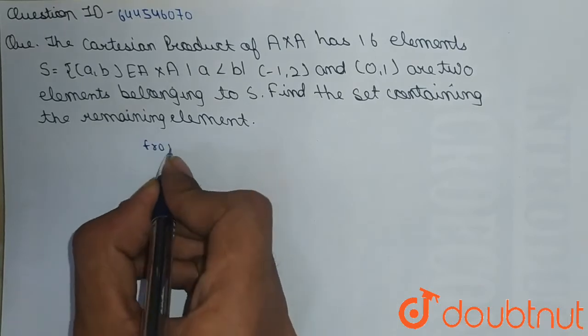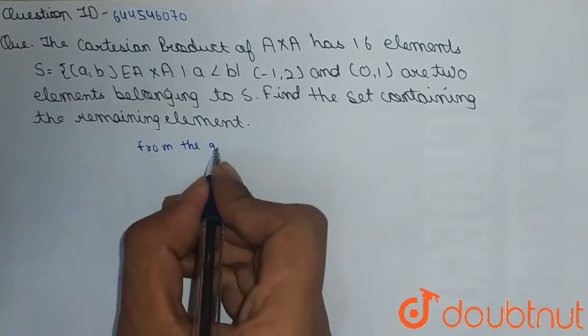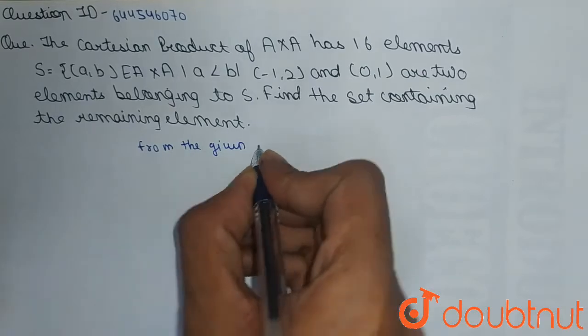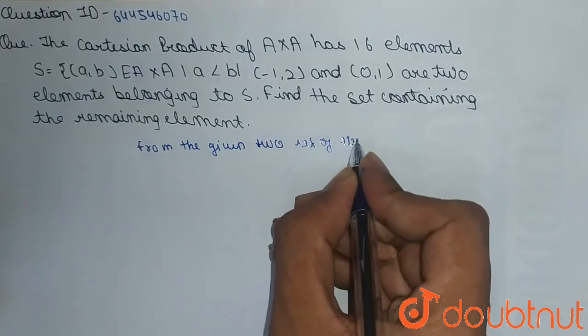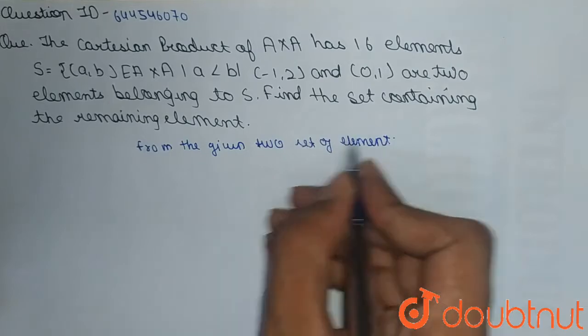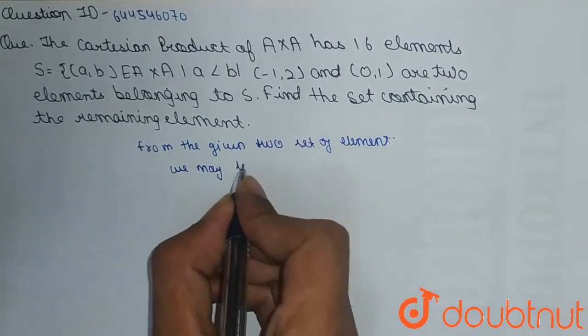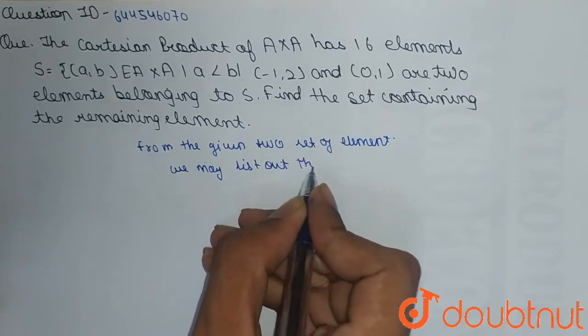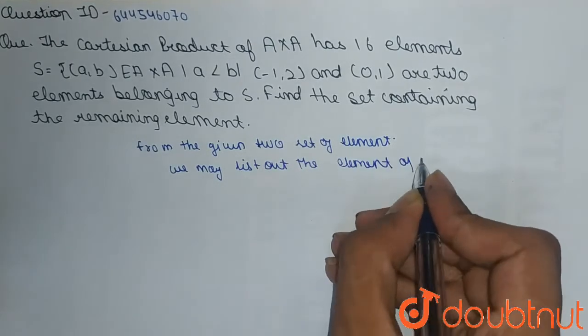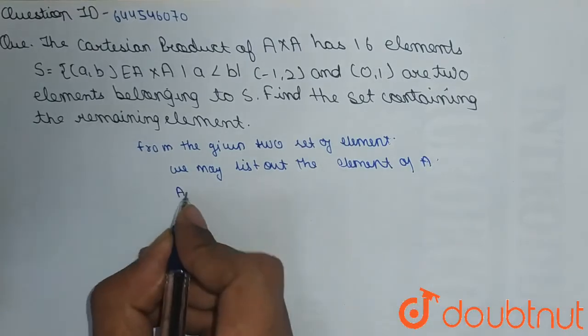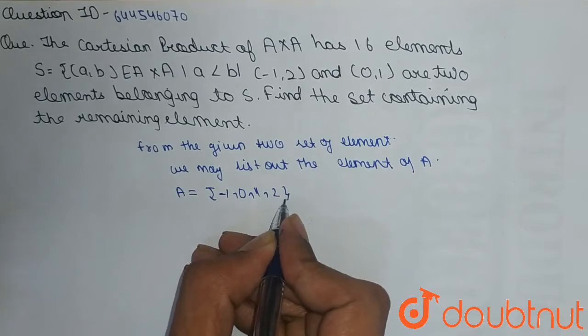From the given two elements, we may list out the elements of A. So from this, A will be equal to {-1, 0, 1, 2}.